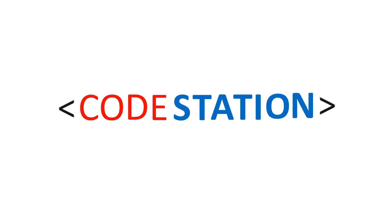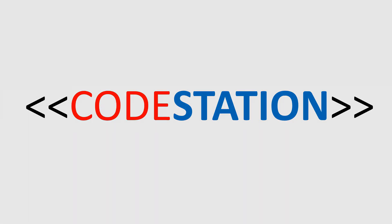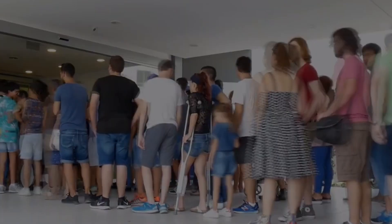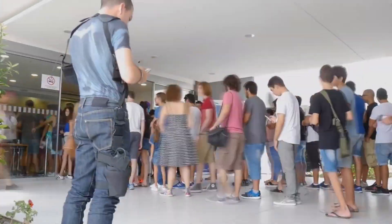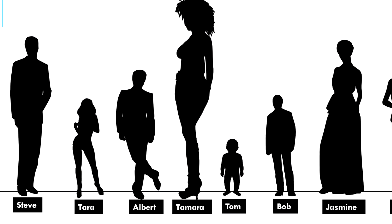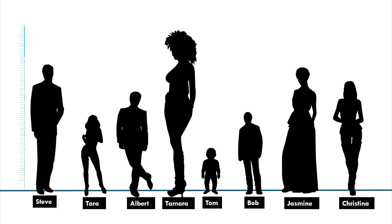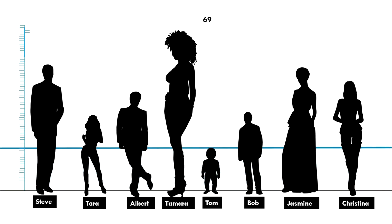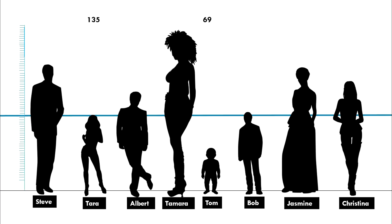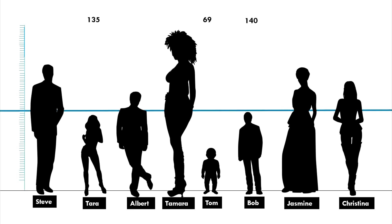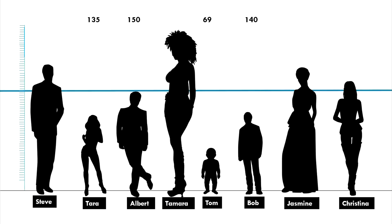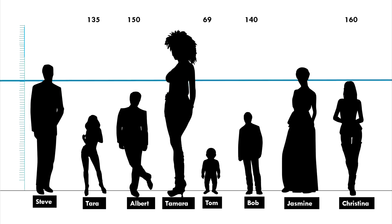Welcome to Code Station. Let's say that we are asked to sort 8 people in the order of their height. You can swap the position of 2 people, but you can't keep a person outside of a line permanently. First, let's see what their heights are. Tom, who is just a baby, is 69 cm tall. Then Tara is 135 cm. Bob is 140 cm. And Albert is 150 cm. Christina is 160 cm tall.